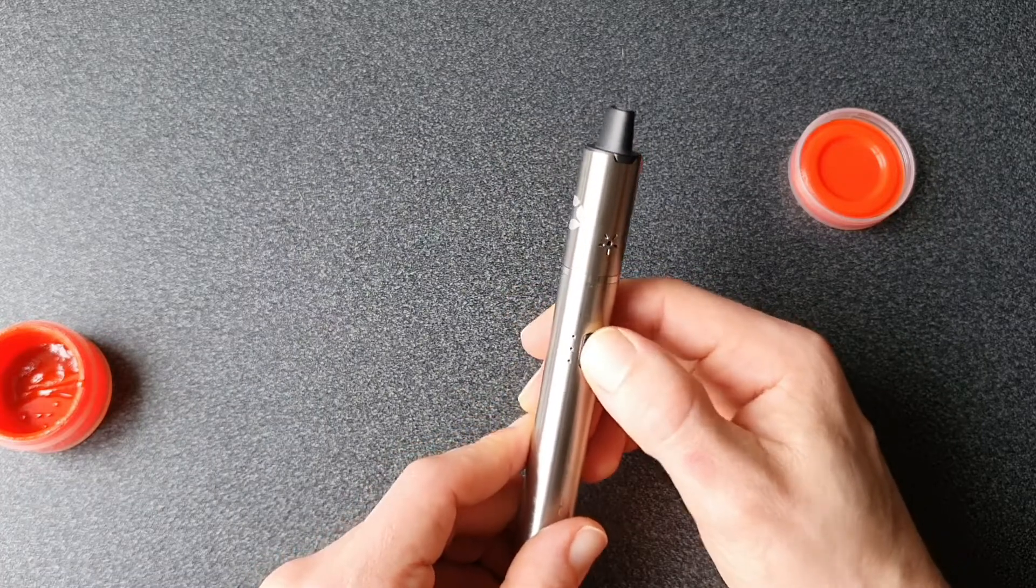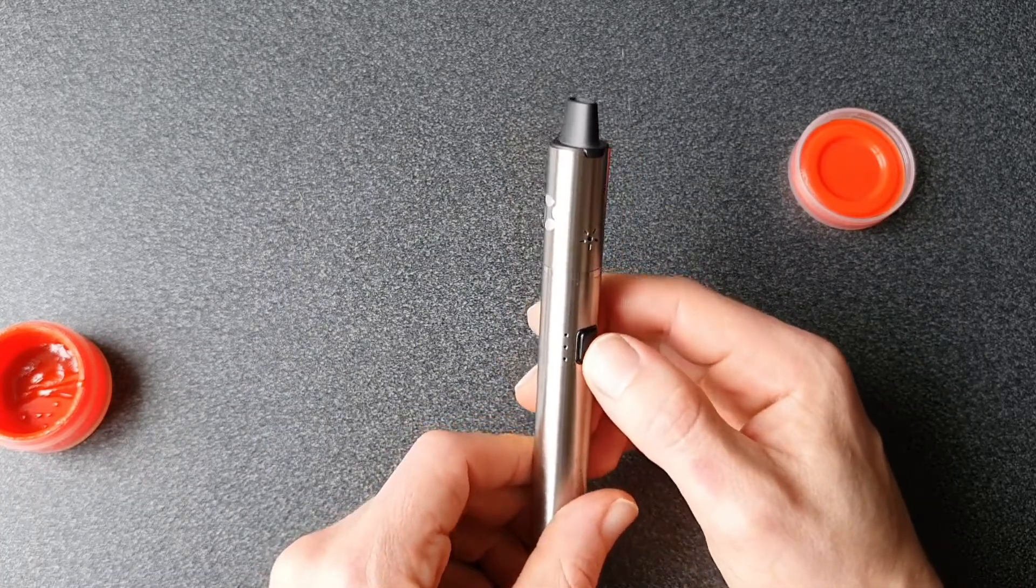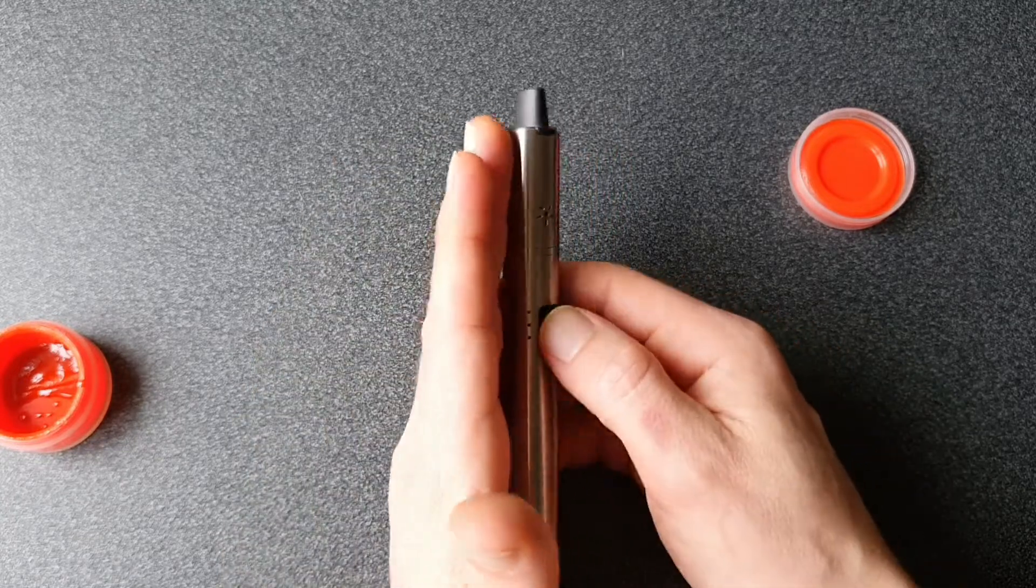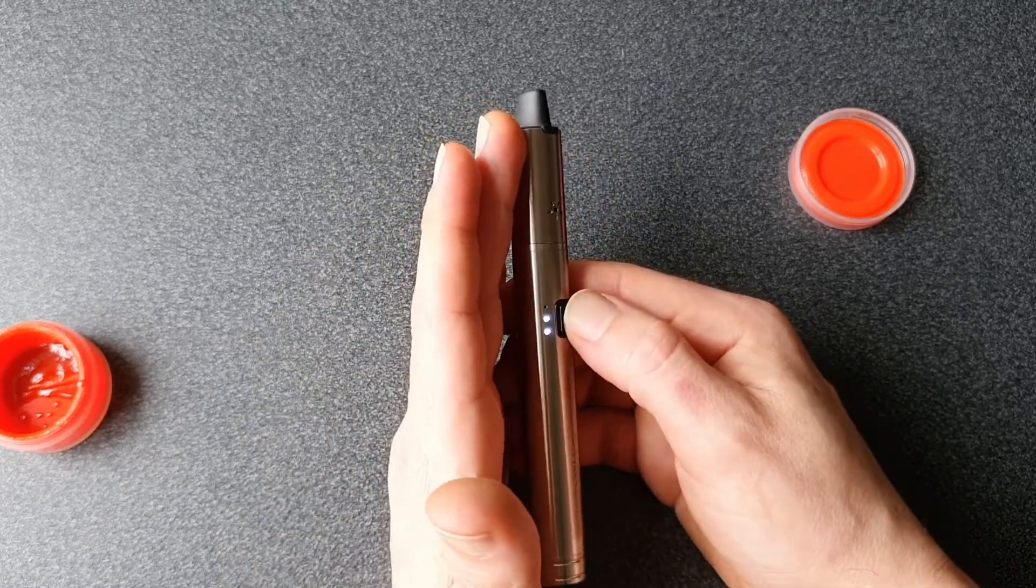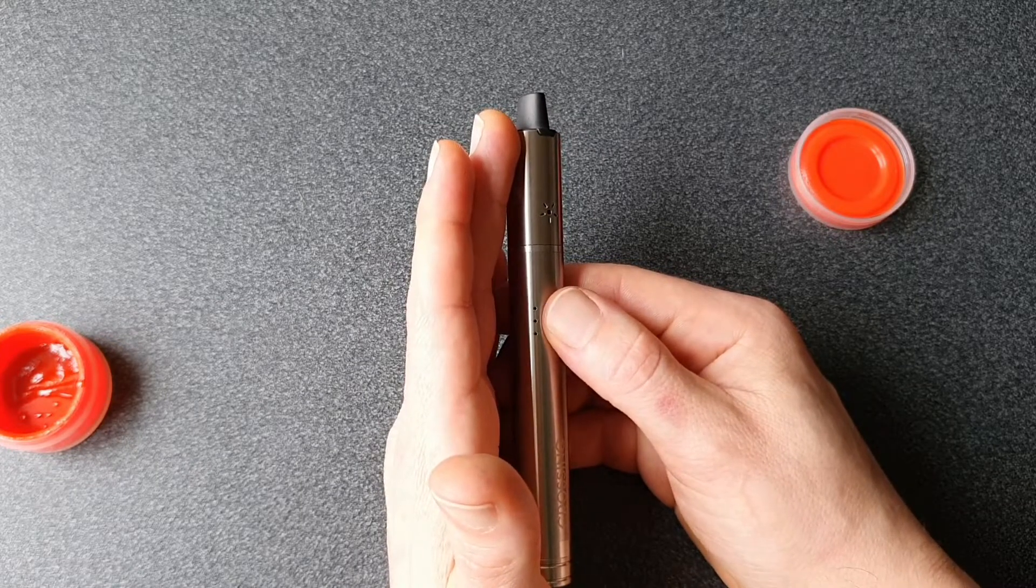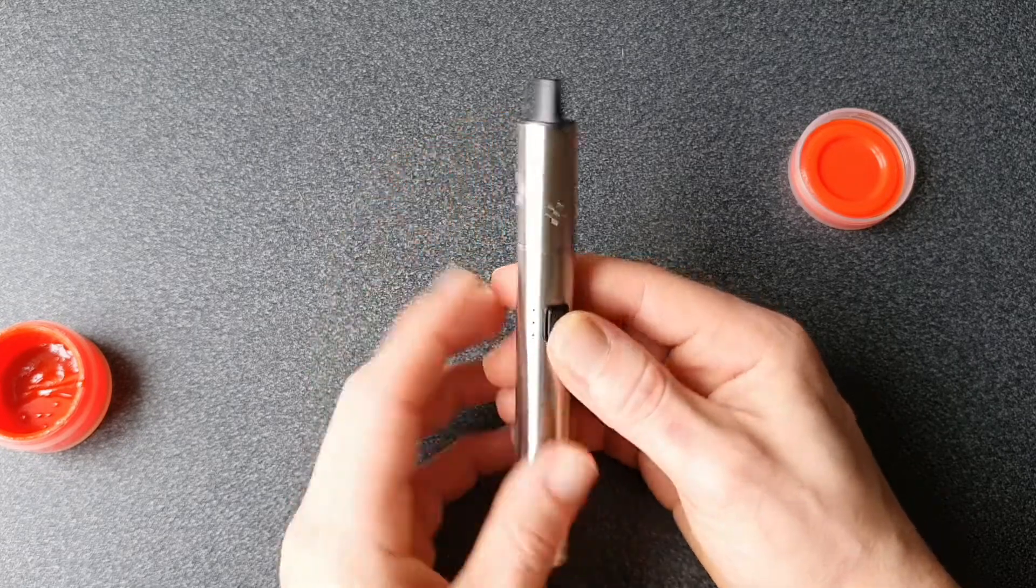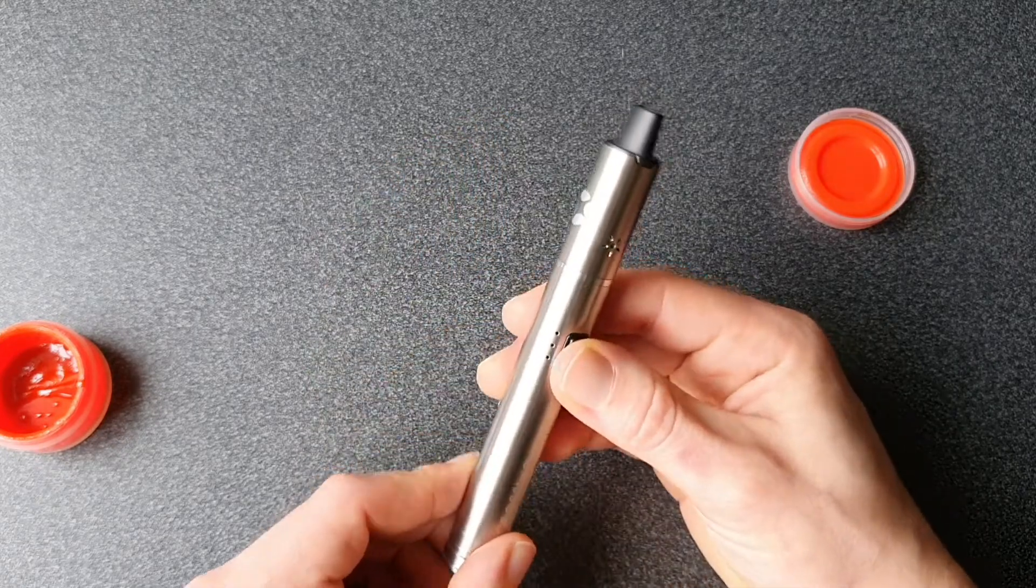So onto the battery. Five clicks to turn it on. And then we have three heat settings. Press the button three times to change between the heat settings. Right. And then I will stick that on high.